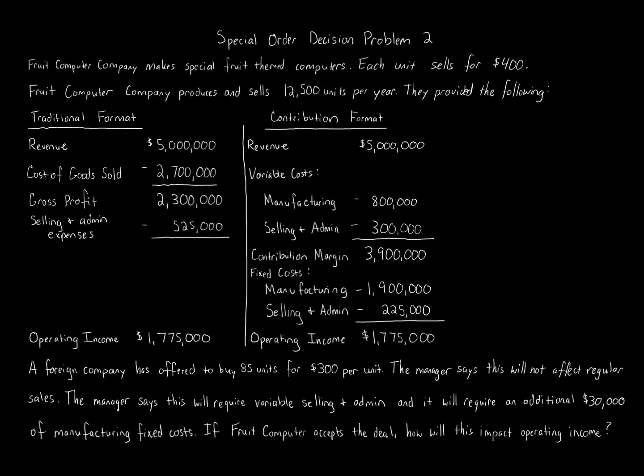We then subtract away fixed costs of manufacturing of $1,900,000 and selling and administrative of $225,000 to get the operating income of $1,775,000 — the same result under both formats.